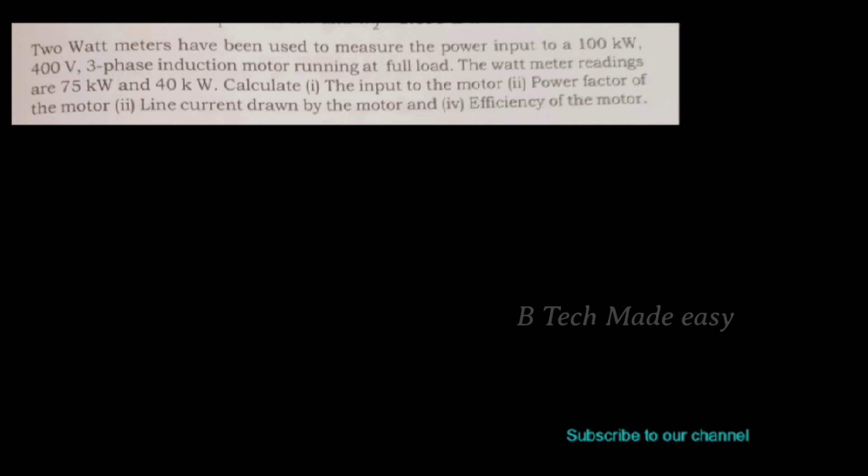Now we have two watt meter readings. We have to find the power input to the motor. Power input to the motor is represented by letter P, which is equal to W1 plus W2. That is 75 plus 40, which is equal to 115 kilowatt. This is the first question.